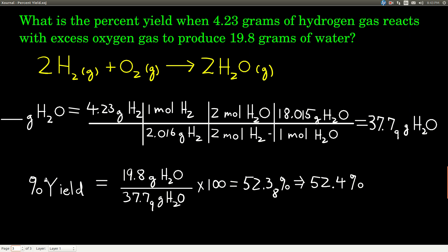So, we want to find out the percent yield if you react 4.23 grams of hydrogen gas with excess oxygen gas, and you produce 19.8 grams of water. So, if I told you how much oxygen gas reacted, then you have to go through the whole limiting reactant thing. But to keep it simple, we'll say oxygen is in excess, our limiting reactant is hydrogen, so we already know that.